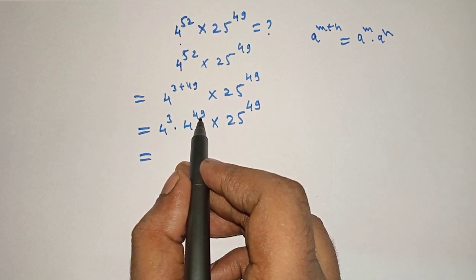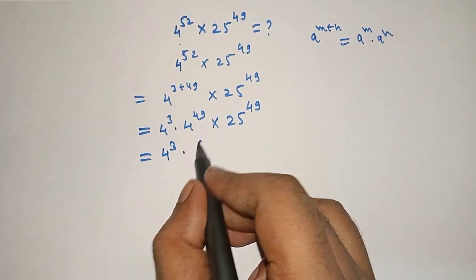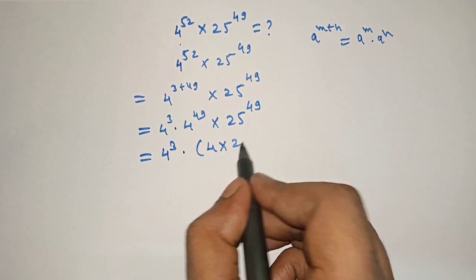4 cube times, we will take it as 4 times 25 the whole raised to 49.